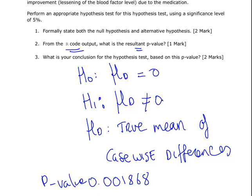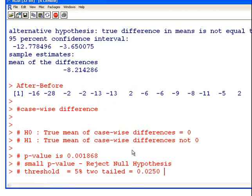I'll draw your attention to another way we might go about this question, looking at the confidence interval. The true mean, the expected value for case-wise differences under the null hypothesis is zero. The null value is zero. And is zero in that range of values for the confidence interval, minus 12.77 to minus 3.65? No, it's not. That's a different way you could look at it. Because it's not, again, reject the null hypothesis.